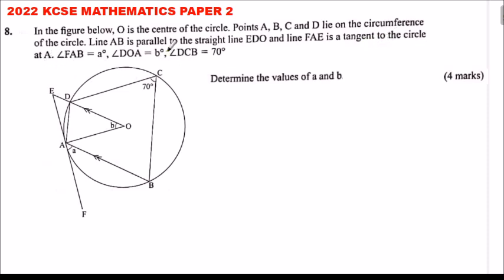Angle FAB is labeled a, and angle DOA is labeled b. Angle DCB is 70 degrees. We need to determine the values of a and b.